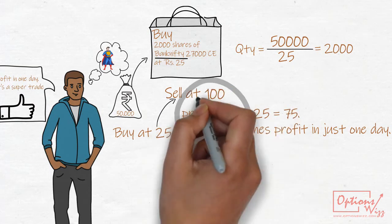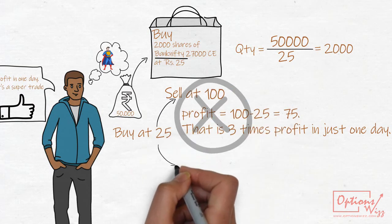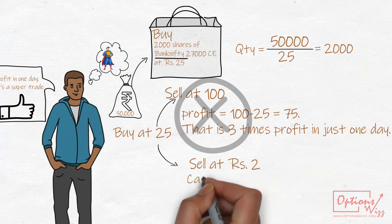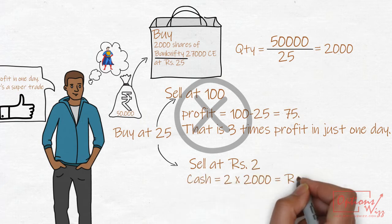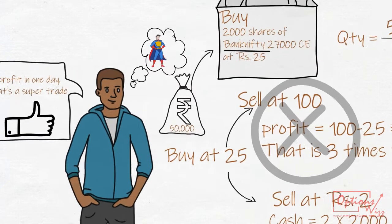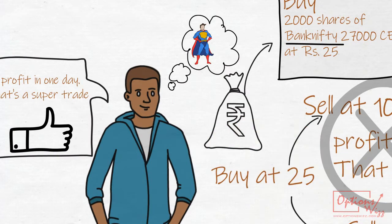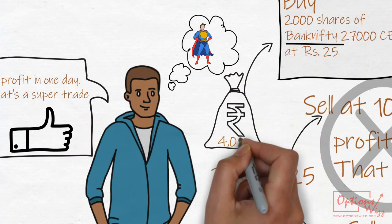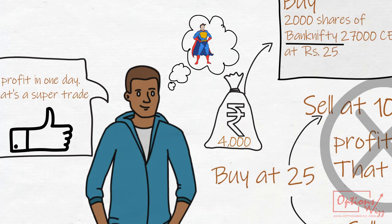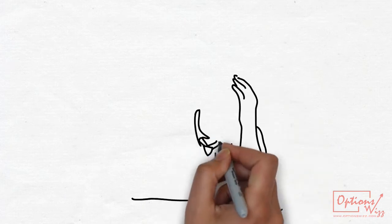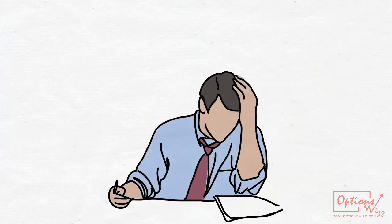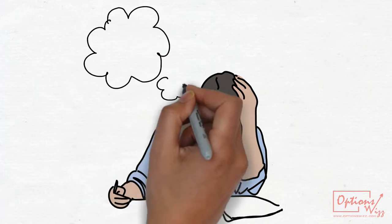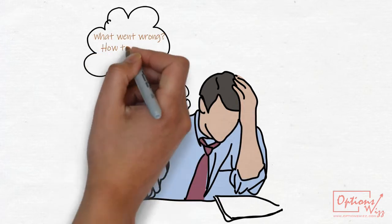Raj bought this option at 25 and sells at rupees 2. His account is holding just rupees 4,000. From hero, he becomes zero. Holding his breath, Raj is wondering what went wrong. Why is his option trading at just rupees 2? How to recover this loss?